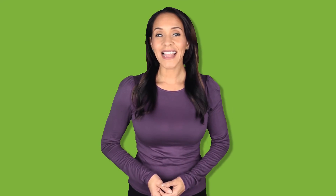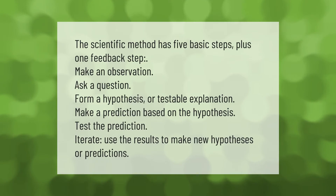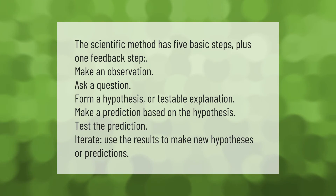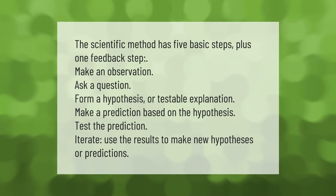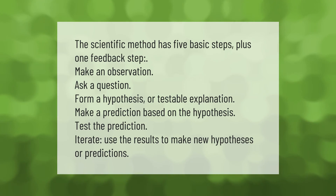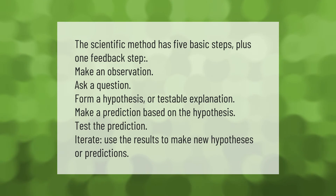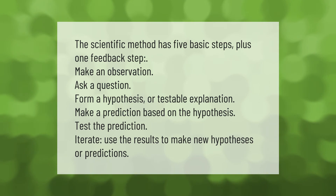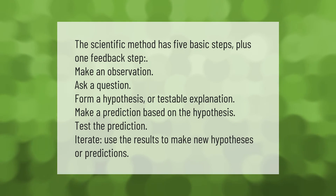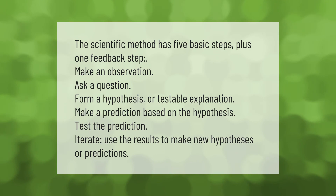The scientific method has five basic steps plus one feedback step: make an observation, ask a question, form a hypothesis or testable explanation, make a prediction based on the hypothesis, test the prediction, then iterate — use the results to make new hypotheses or predictions.